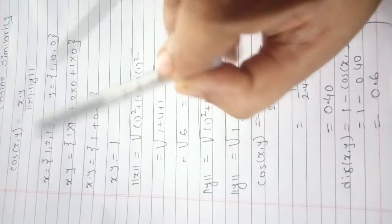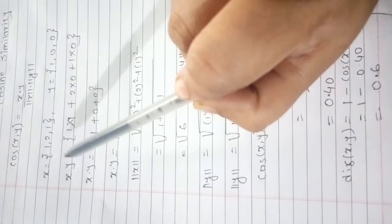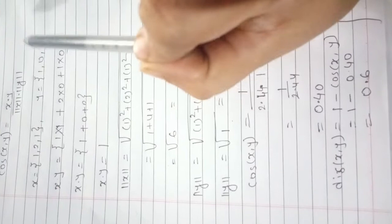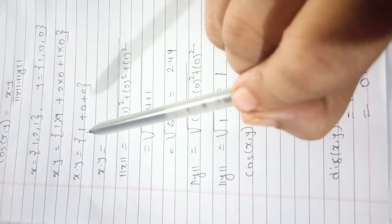How to find out this x dot y? Take this 1, multiply with this 1. Next, take this 2, multiply with this 0. Take this 1 and multiply with this 0. So we will get 1 plus 0 plus 0, and the final answer will be 1.